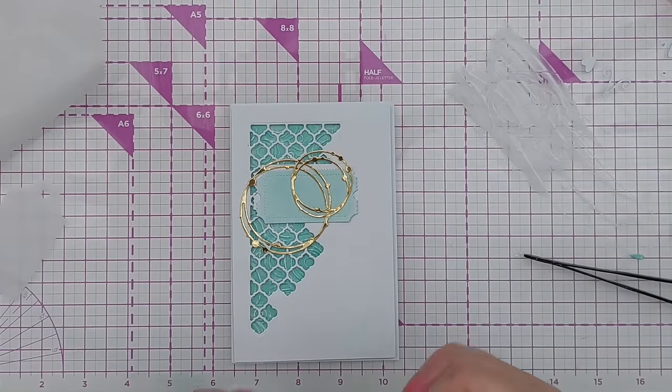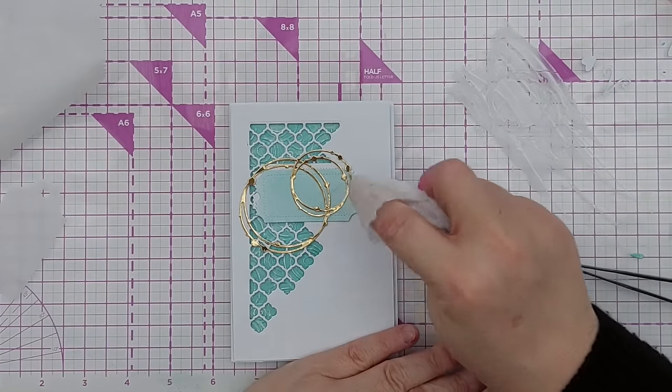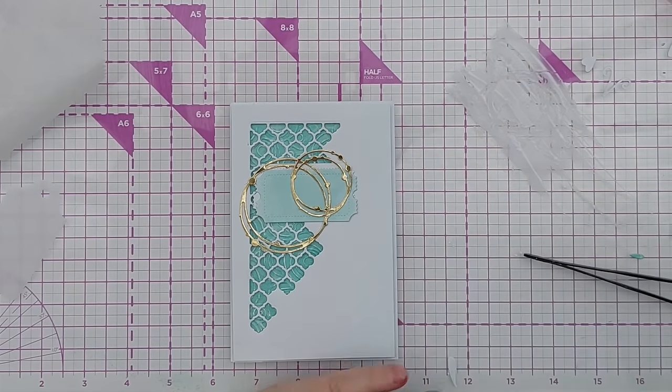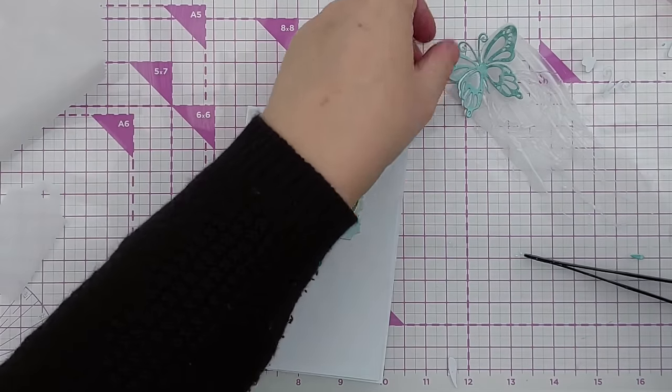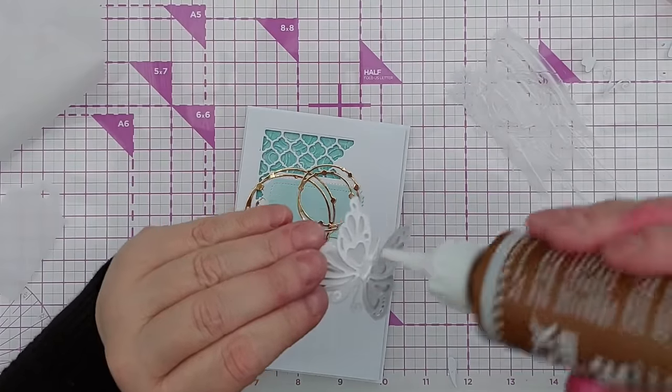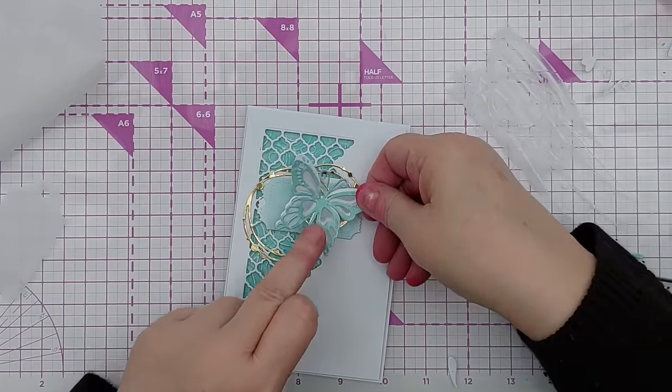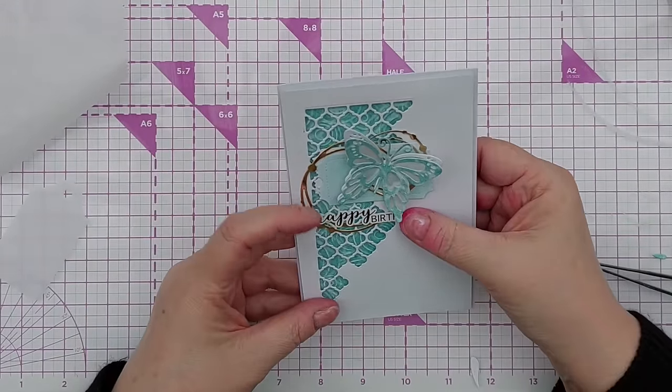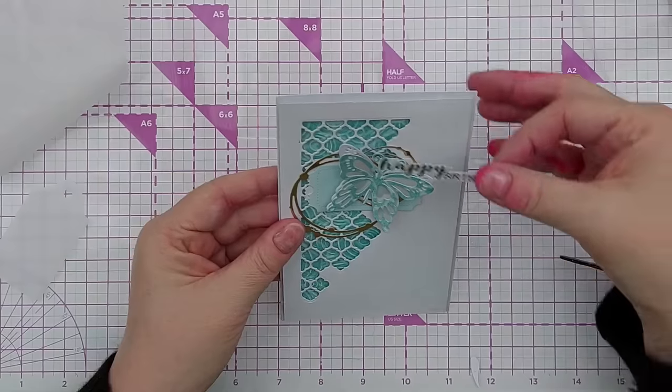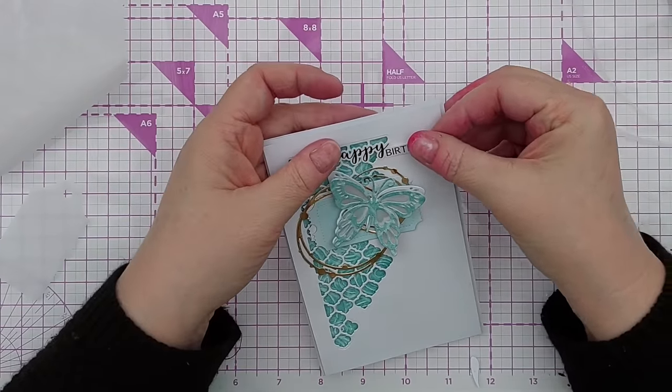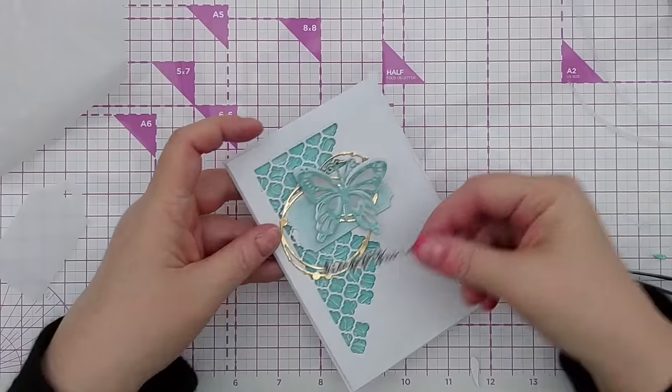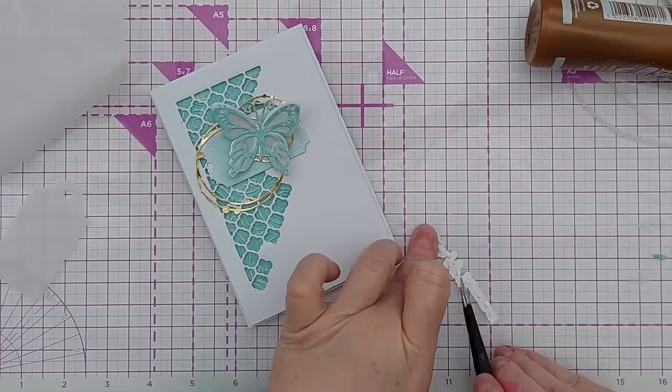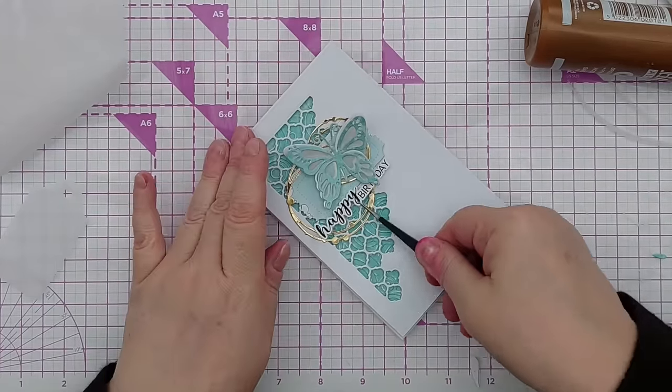Get a damp baby wipe on the end of my finger and I can just lift off any smudges of glue from the foil. Carefully pop some glue on the body part of my butterfly and attach that there. I've got a ready-made sentiment here, this is one I created in the Silhouette Studio software and printed at home, then cut on my Silhouette Cameo. I think I'll just glue that down nestled into this area here.